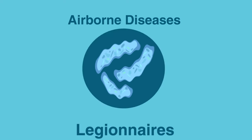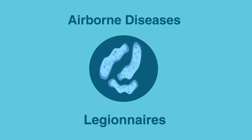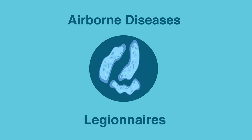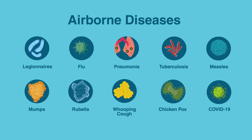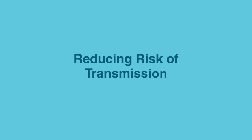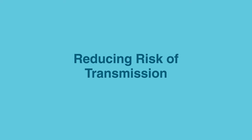Diseases that spread through the air include Legionnaires disease, which comes from environmental sources, and many others transmitted from people, such as the flu, pneumonia, tuberculosis, measles, mumps, rubella, whooping cough, chickenpox, and the COVID-19 virus. Understanding how these diseases pass from one person to another is crucial for reducing the risk of transmission.